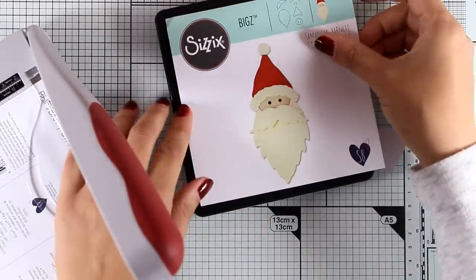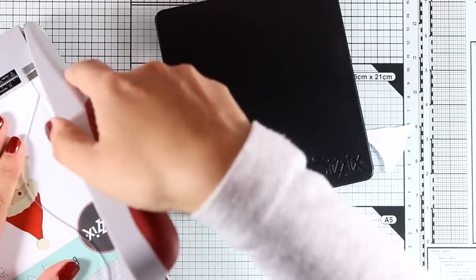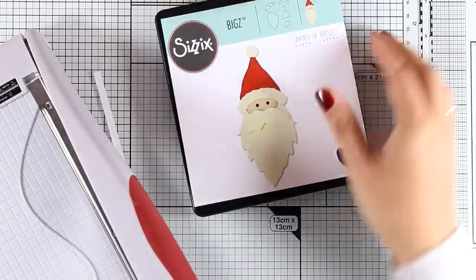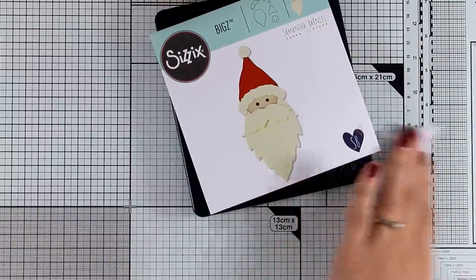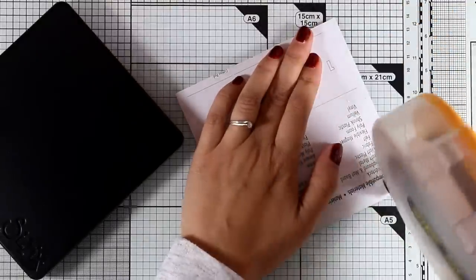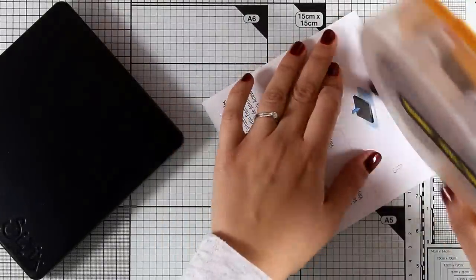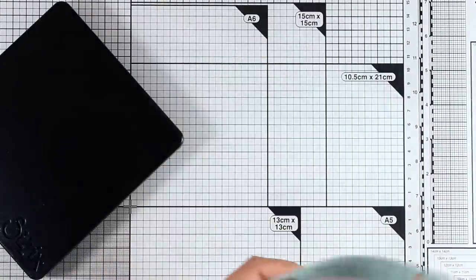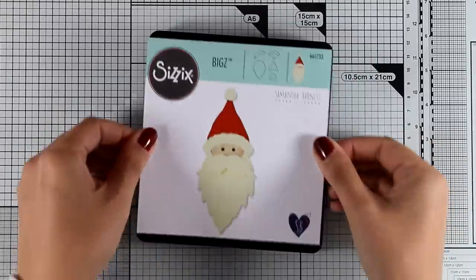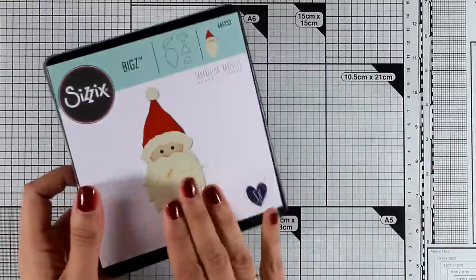I'm going to show you how I like to store them. Just because they're black front and back, although there is a label on the side, I like to have the image in front of my die just for easy browsing. So I like to cut out the front of the packaging and just stick it there with my tape adhesive. I store my Bigz dies vertically one behind the other in boxes, and having this image in front of them really makes browsing through them super easy for me.